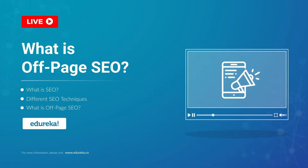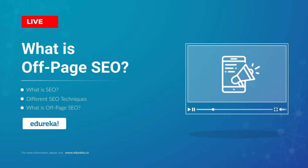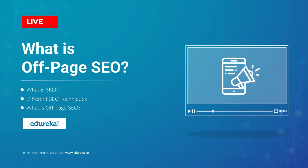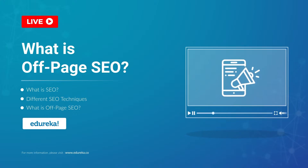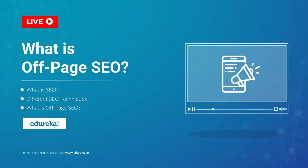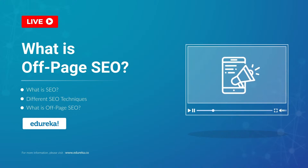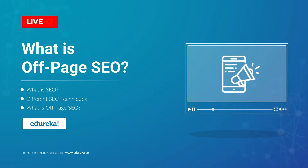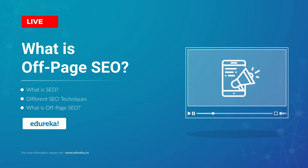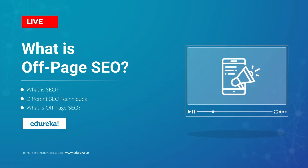Search engines like Google use complex algorithms to determine the ranking of your website on search engine result pages. One way to increase traffic is by optimizing your website, which is majorly based on the content present on the page. This video will mainly focus on off-page SEO.